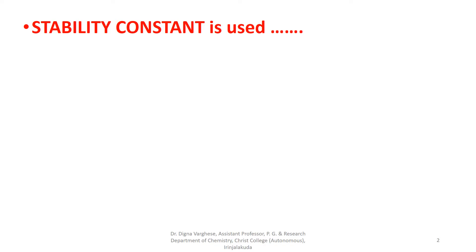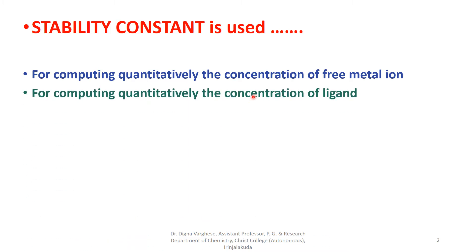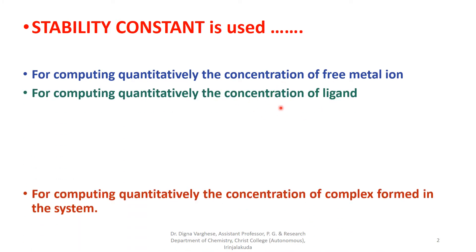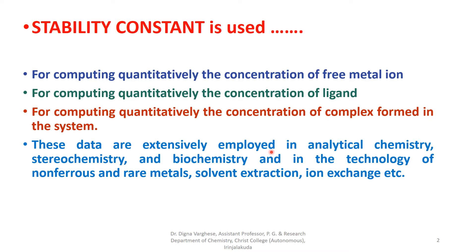Stability constant is used for computing quantitatively the concentration of free metal ion, concentration of ligand, and concentration of complex formed in the system. These data are extensively employed in analytical chemistry, stereochemistry, and biochemistry and in the technology of non-ferrous and rare metals, solvent extraction, ion exchange, etc.